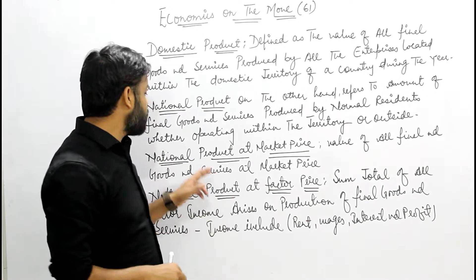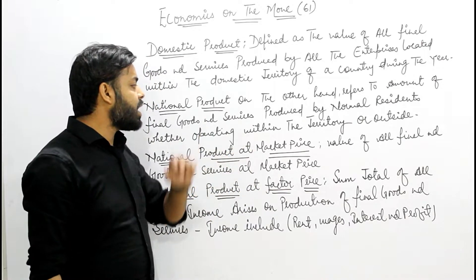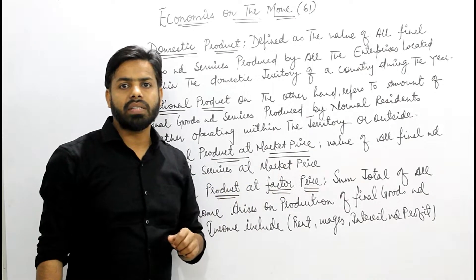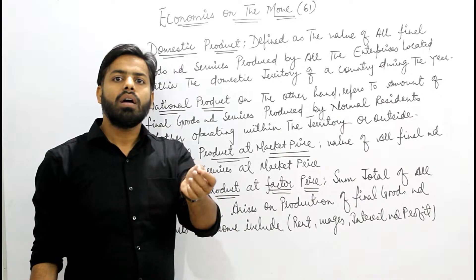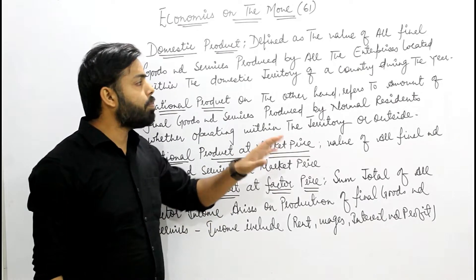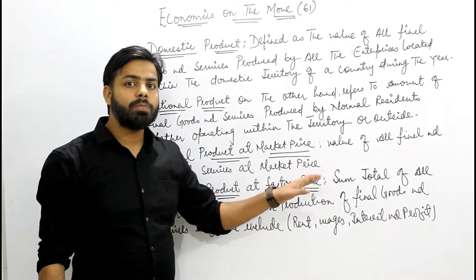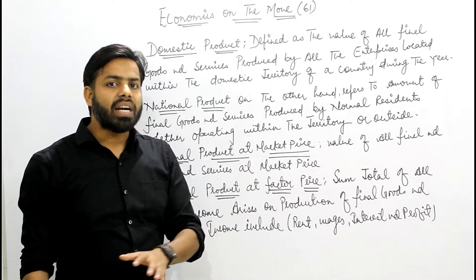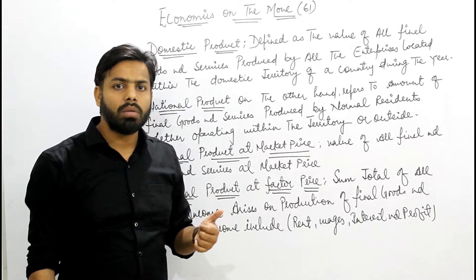यहाँ पर दो चीज़ें और हैं: national product at market price और national product at factor cost। National product at market price का मतलब है value of all final goods and services at the market price। At the market price का मतलब — उस वीडियो को जाके check करिए जहाँ हमने indirect tax और subsidy को discuss किया है। National product at factor cost — factor price या factor cost — class 11 में हमने factors of production micro economics में discuss किया था।